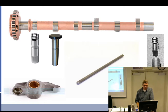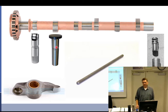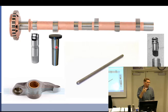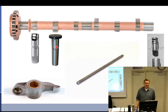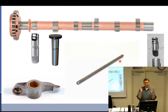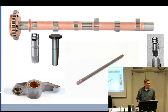If the dry tappet clearance is too much when everything is assembled correctly and you're on the right stroke, the solution is a longer push rod. Push rods come in oversizes for this reason — standard, 10, 20, 30, 60, and 90 thousandths oversize. Too much clearance: use a longer push rod. Not enough clearance: use a shorter push rod.